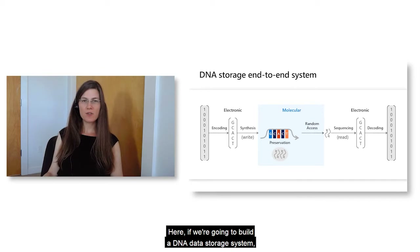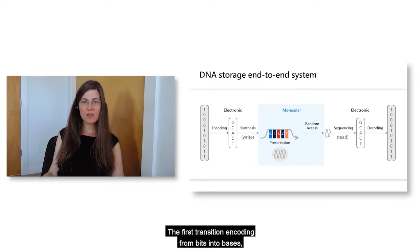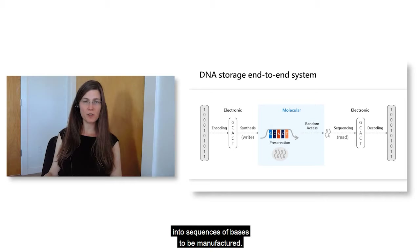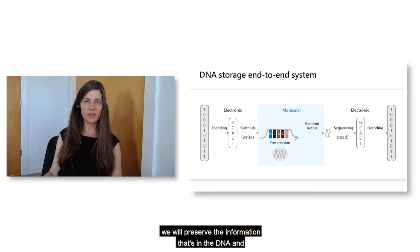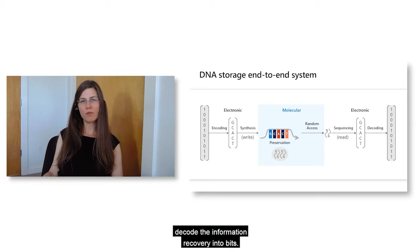If we're going to build a DNA data storage system, here's what it looks like. The first step is encoding — translating from bits into bases. This happens in the electronic domain using a computer to translate bits into sequences of bases to be manufactured. Then we go to the manufacturing process. Once the molecules are made and the data is safely stored, we preserve and encapsulate the DNA. When it's time to read the information again, we retrieve the molecules — that's the random access — sequence them, and decode the information recovering the bits.